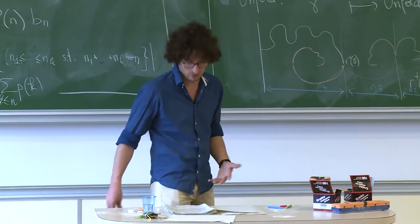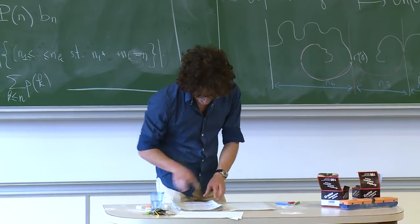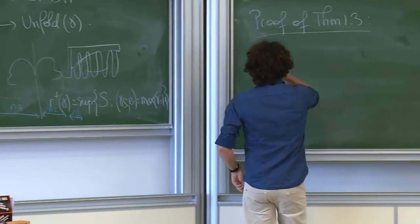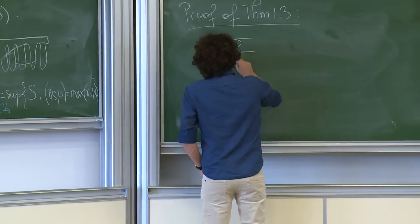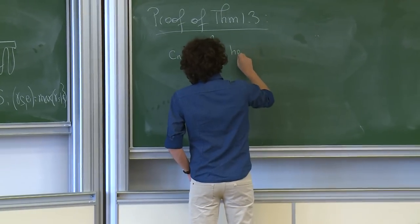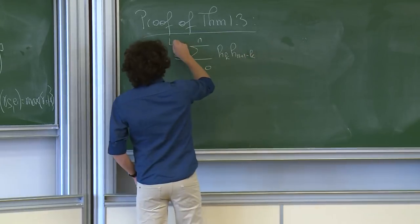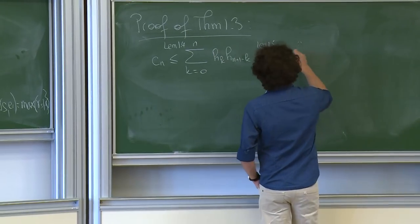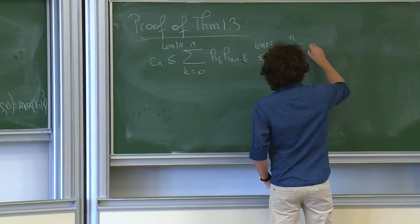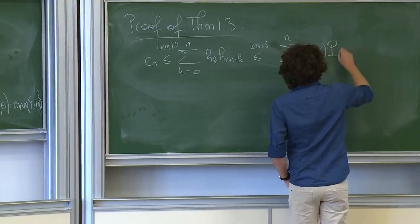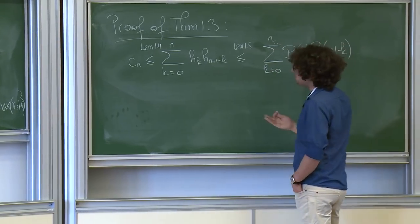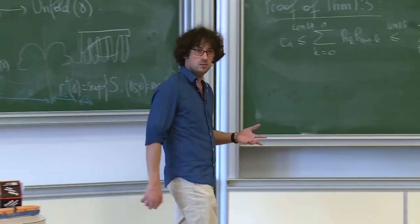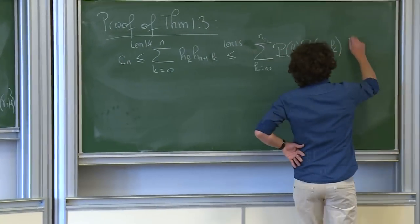To obtain the Hardy-Ramanujan bound p_n ≤ e^{π√(2n/3)}, note that the generating function f(x) = Σ p_n x^n equals Π_{n≥1} 1/(1−x^n). Then log f(x) = Σ_{n,k≥1} x^{nk}/k = Σ_k x^k / (k(1−x^k)). For any x < 1, p_n x^n ≤ f(x) = exp(log f(x)), and you optimize over x to get the sub-exponential bound.